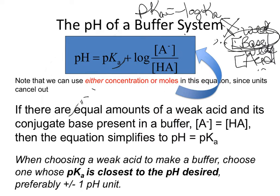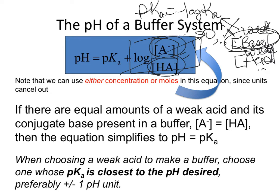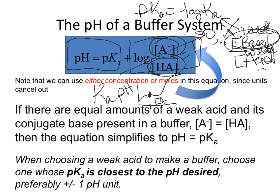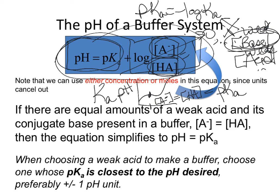If the ratio of conjugate base to weak acid is exactly 1, then log(1) = 0, and pH simply equals pKa. This is what's used in the Ka lab: at the halfway point of a titration, the concentration of conjugate base equals the concentration of the original weak acid, so pH = pKa. That simplification of the Henderson-Hasselbalch equation is how you find pKa in the lab.